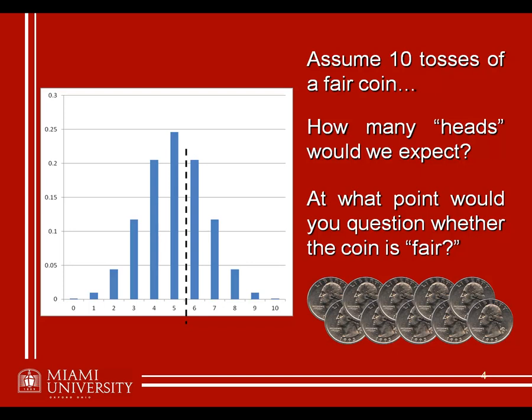What is the probability of getting 6 heads or more? What if we moved our cutoff down to some number between 5 and 6? In other words, 6, 7, 8, 9, and 10 are the values we're now interested in. We can look at the total or cumulative probability associated with values 6, 7, 8, 9, or 10 — in other words, add up the probability of obtaining an outcome of 6 or greater. And if we do that, this is exactly what we would call our p-value.